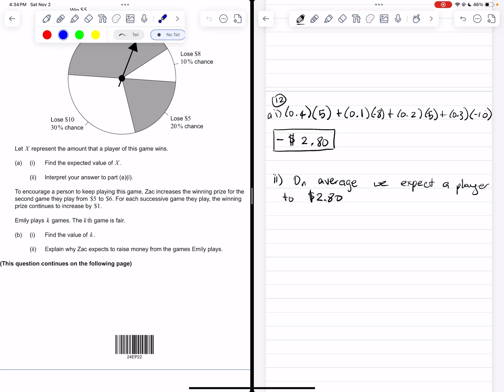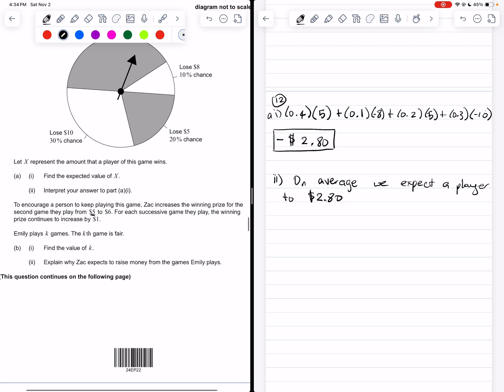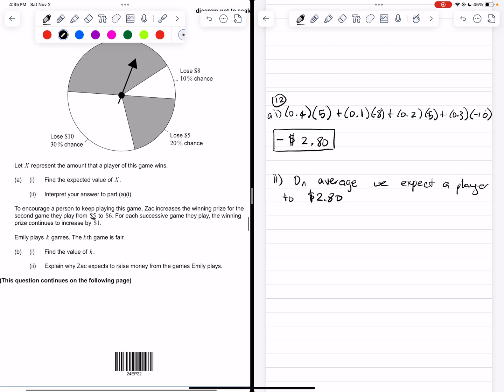So let's keep going and continue with this question. So here it says that to encourage a person to keep playing the game, Zach increases the winning prize from $5, then to $6, and then keeps increasing that winning by $1. And they want to know what will make this game fair. And when they say make the game fair, they mean they want a result where the expected value is equal to $0. That means you don't expect the person to win any money, you don't expect the person to lose any money. So we want an expected value of $0.